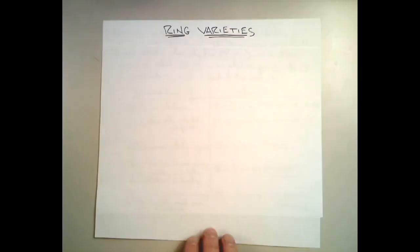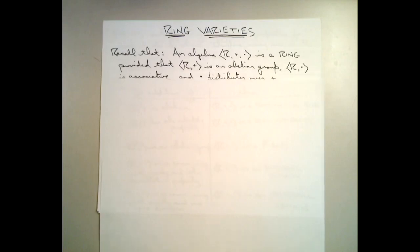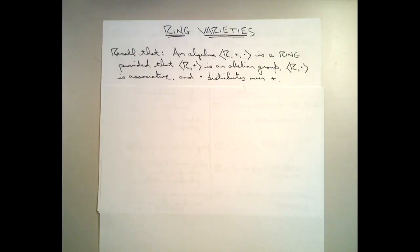In our most recent video, we introduced the notion of a ring, an algebraic structure that has two operations rather than just the one that we were considering whenever we were studying groups. Rings come in several flavors that are important to algebraists, and we'd like to discuss several of those today. Let's go to the whiteboard. So just as a reminder, a ring is an algebra with operations that we represent as addition and multiplication, where the set R together with the additive operation is an abelian group, the set together with the multiplicative operation is an associative algebra, and the two operations interact through the distributive property.